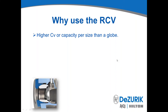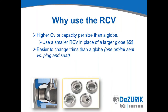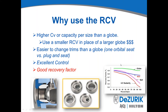So, why use the RCV in review? It has a higher CV or capacity per valve size than a globe, which could be a significant cost savings — you can use a smaller RCV in place of a larger globe, and that is where the dollar savings can be realized. Easier to change trims than a globe valve — one orbital seat versus having to replace a plug and seat. From a maintenance standpoint it is very easy to do. It has excellent control, and it has a very good recovery factor.